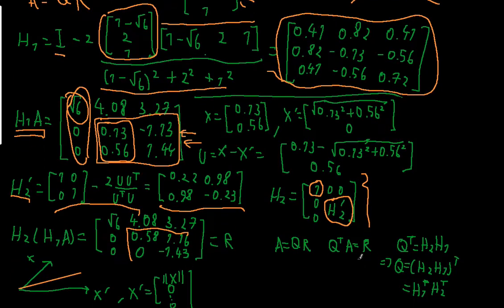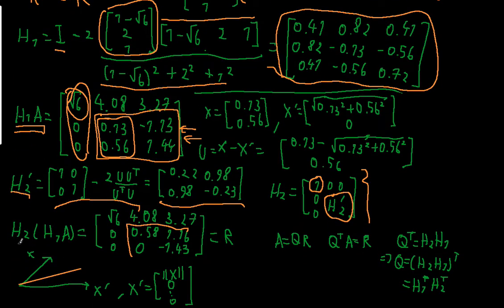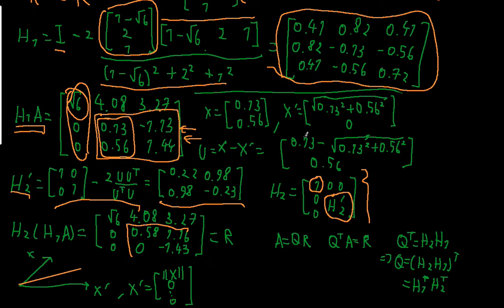Now the dimensions match again. We can multiply A times H1 by this H2. Again, the numbers outside the submatrix didn't change — because we put a 1 in the diagonal and 0 elsewhere outside the submatrix. In the submatrix, the first column vector has 0 as its second component, and the first component is 0.58, which is the length or norm of the old first column vector of the submatrix — so 0.58 is the square root of 0.13 squared plus 0.56 squared. The first column vector of the submatrix is x prime.